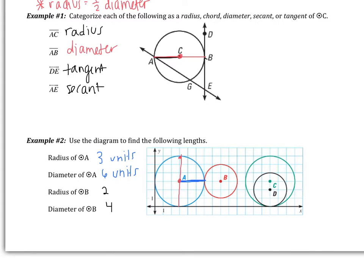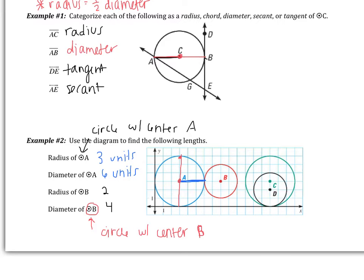Before moving on, let's talk about notation. This notation means circle with center B, and similarly, this means circle with center A. A circle is always named by the point at its center. So if we're talking about a green circle with center C, we call it circle C; if the center is D, it's circle D. Please make sure you make a note of that.